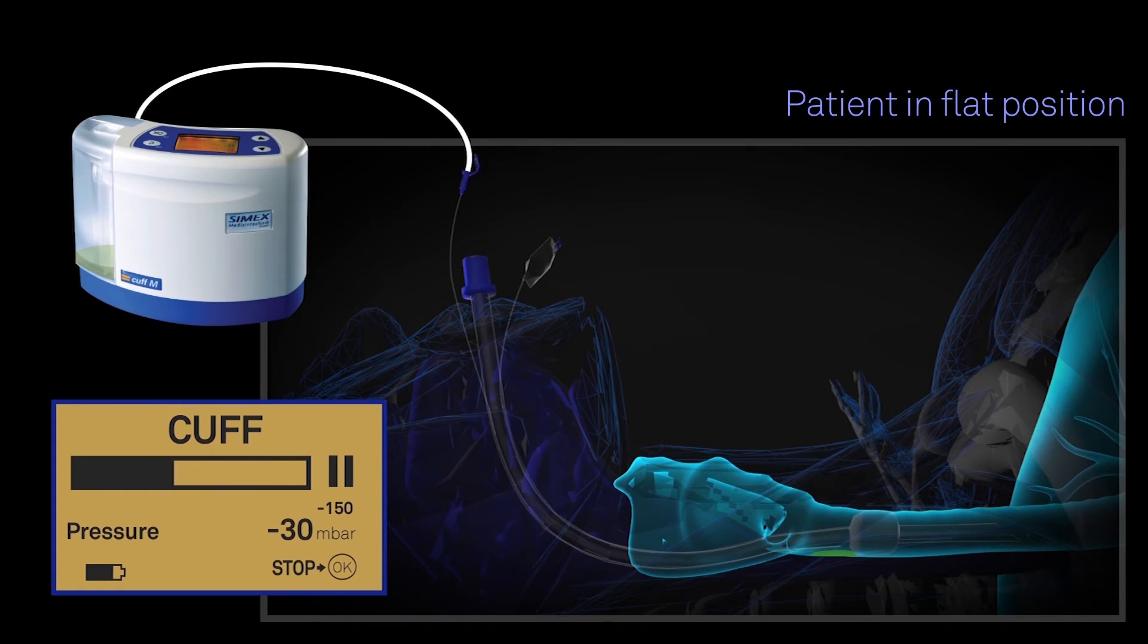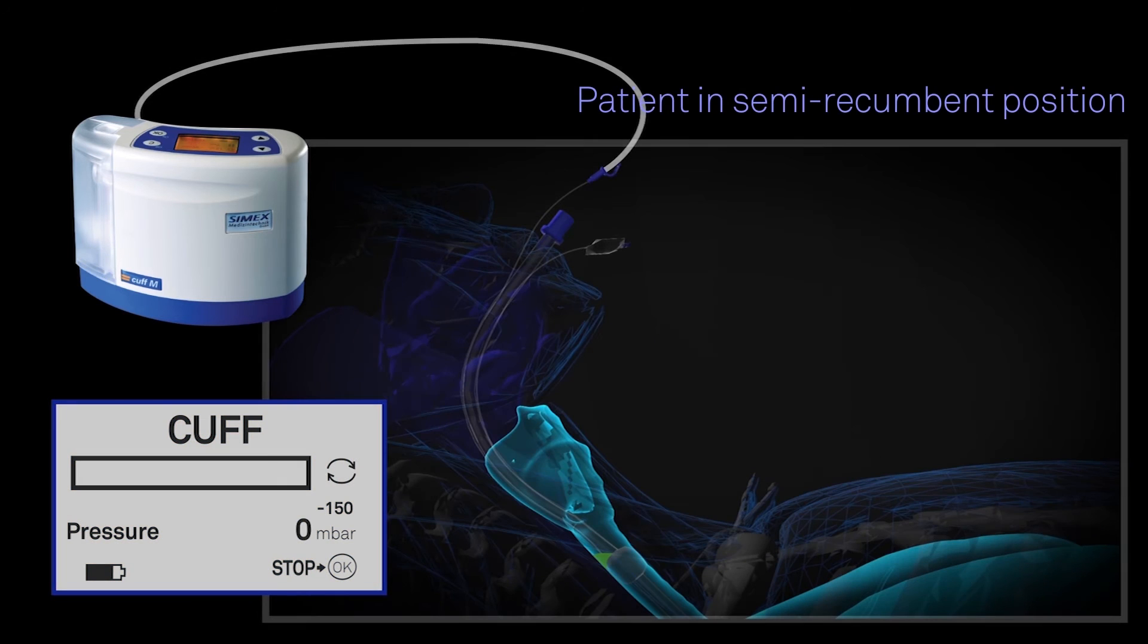Secretions are then aspirated from above the balloon cuff as shown, regardless of whether the patient is in a flat or semi-recumbent position. Notice that during the aspiration phase, normally 12 to 15 seconds in duration, the secretions are removed and collected in the canister.